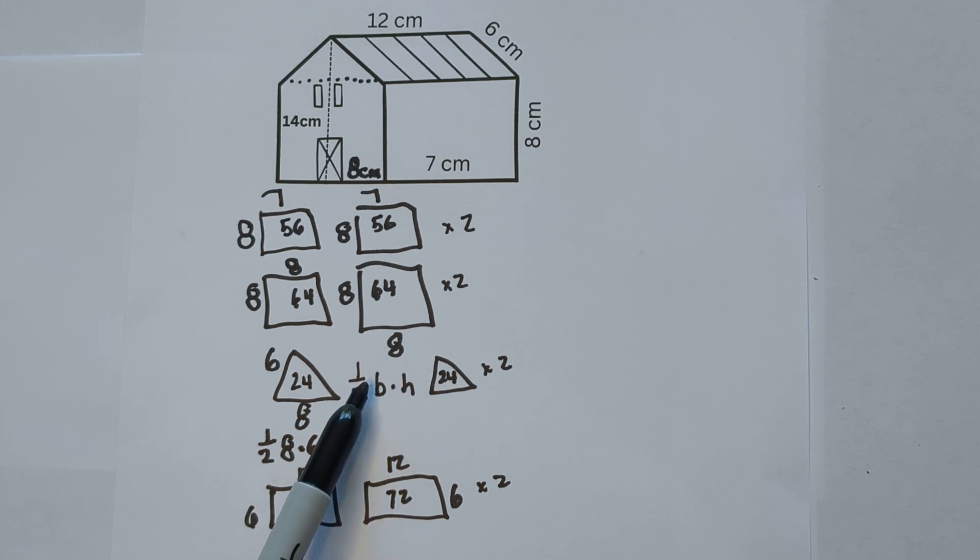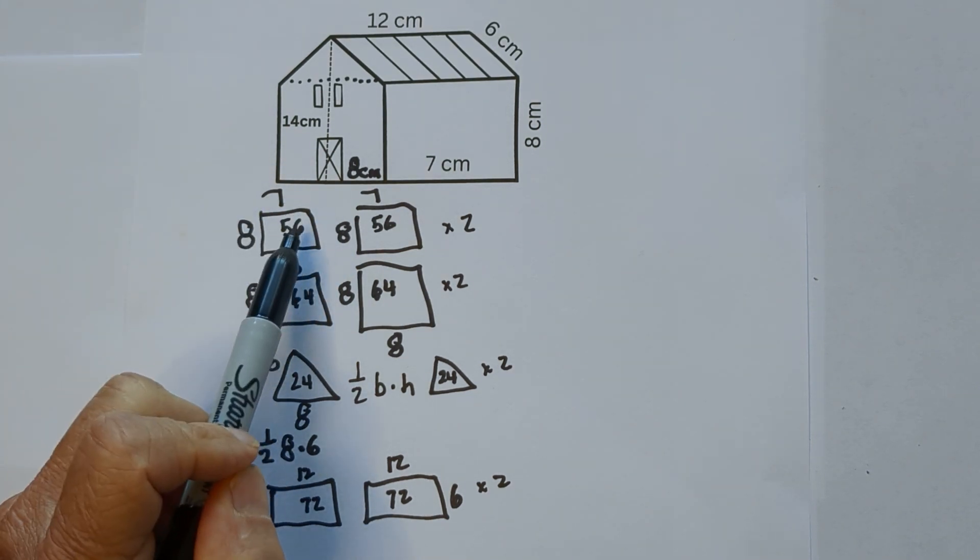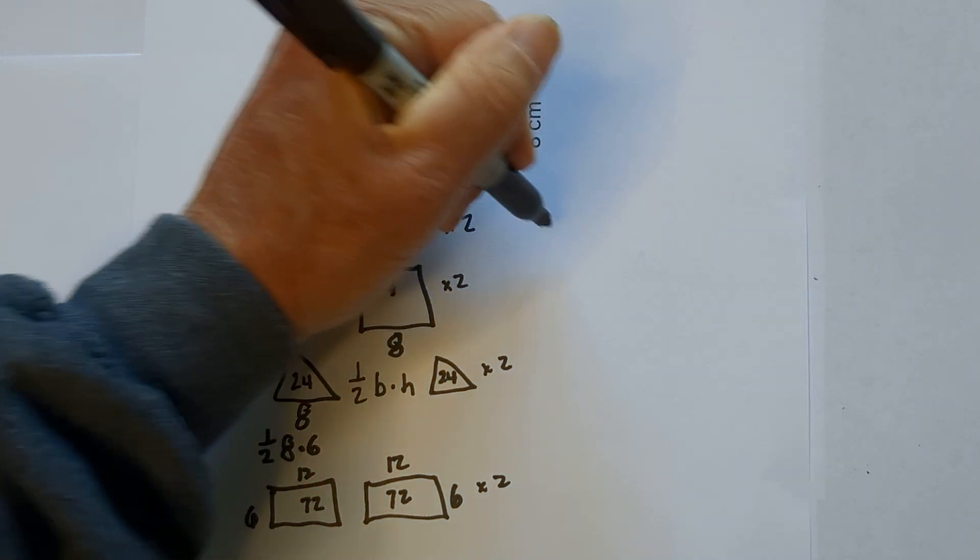And then 6 times 12 is 72. So now what we do is let's just start adding everything together. And since we have 2, I'm just going to multiply everything by 2. So 56 times 2 is 112.